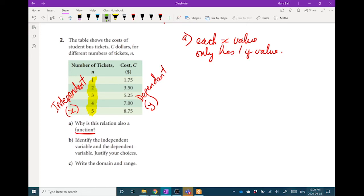All right, B. Well I already did that, I jumped ahead. Independent and dependent variables. Cost depends on how many tickets you buy.